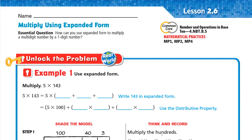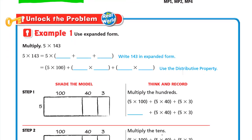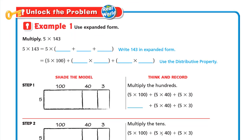Hello everyone, this is Mr. Ahmed and today we'll do lesson 2.6: Multiply Using Expanded Form. Our essential question is: how can you use expanded form to multiply a multi-digit number by a one-digit number? So let's unlock the problem. Example one: use expanded form to multiply 5 by 143.